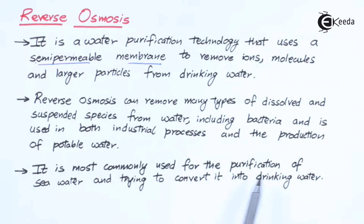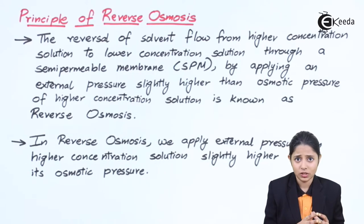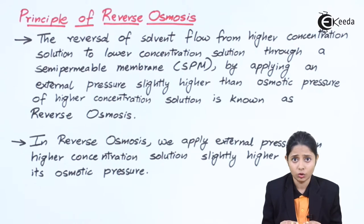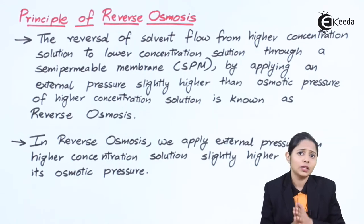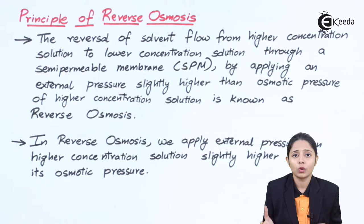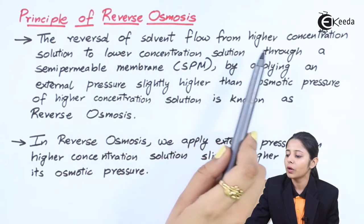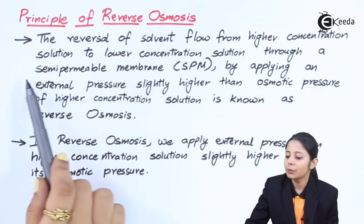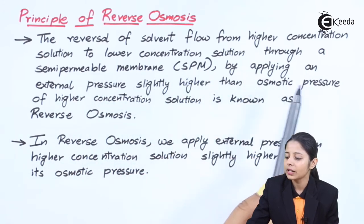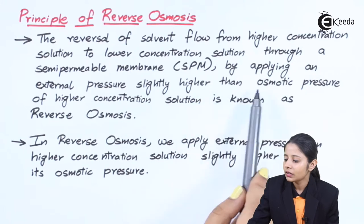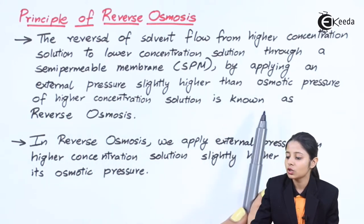Reverse osmosis is most commonly used for the purification of sea water and converting it into drinking water. Sea water can be converted into drinking water by using just this one process. The principle of reverse osmosis is the reversal of solvent flow from a higher concentration solution to a lower concentration solution through a semi-permeable membrane (SPM) by applying an external pressure slightly higher than the osmotic pressure of the higher concentration solution.